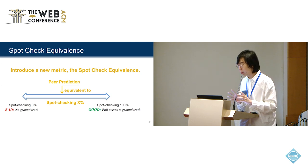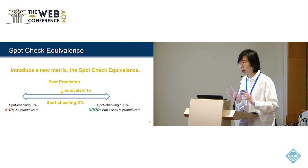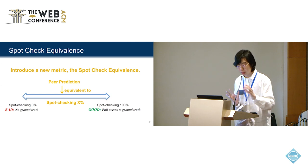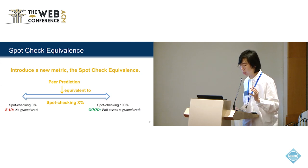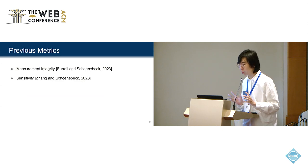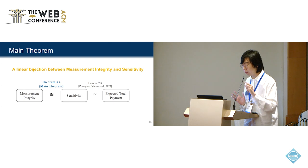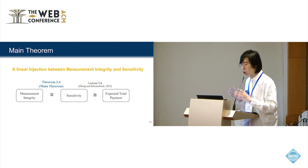If a peer-prediction mechanism has spot-checking equivalence zero, for example, that means it's really bad because it's equivalent to checking nothing. And if a peer-prediction mechanism has spot-checking equivalence 100%, that means it's really good, as good as some mechanism that has full access to the ground truth. This equivalence can be based not only on motivational proficiency but also other previous metrics, including measurement integrity and sensitivity. In our paper, our main theoretical result is we show a linear bijection between measurement integrity and sensitivity. That's our main theorem. We can use that as some proxy of the expected total payment, which is motivational proficiency.